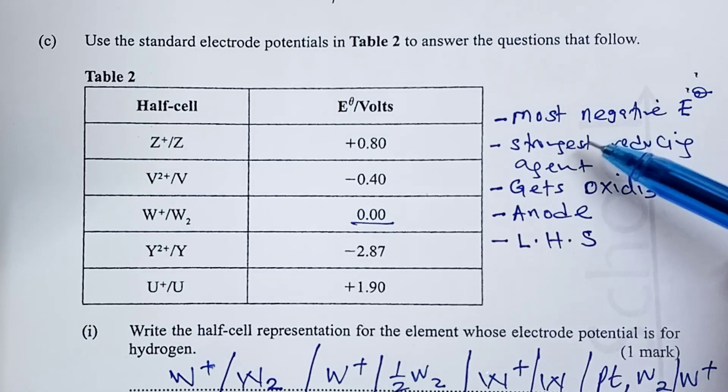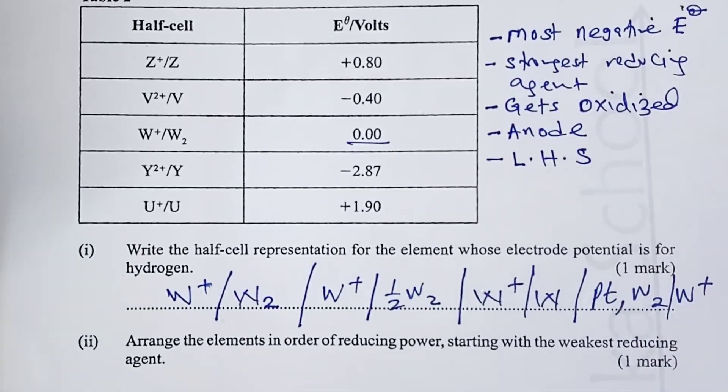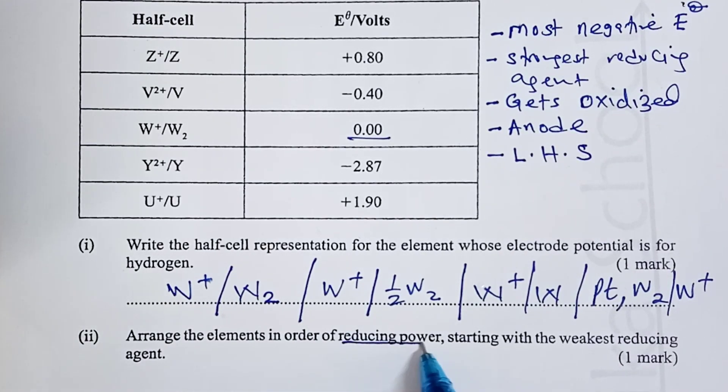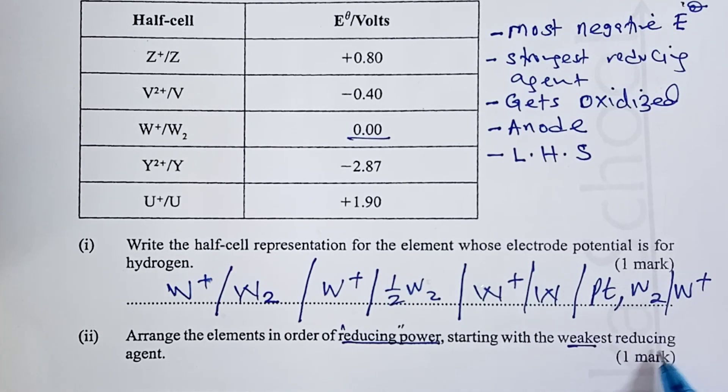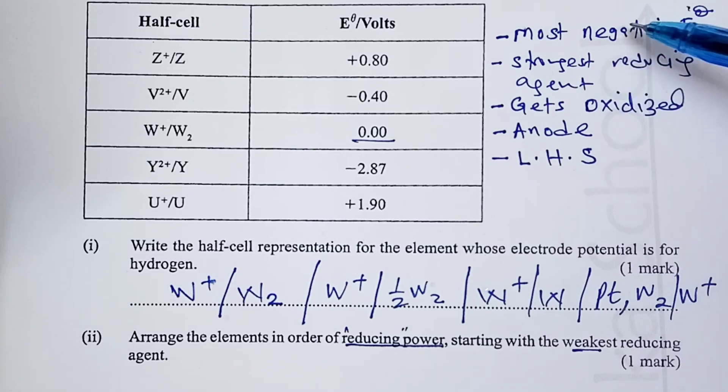This becomes the tagline that would help us answer our question too. For most positive, it is the opposite of what we have written here. Coming now to our question. We've been asked to arrange our elements in order of reducing power, reducing power, starting with the weakest reducing agent. We have said the one with the most negative is the strongest oxidizing agent. So, it means the weakest reducing agent would be the one with the most positive.